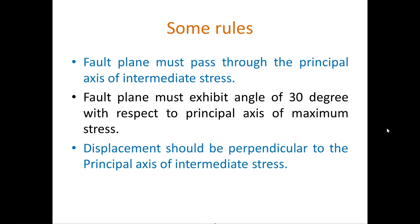Rule number one: the fault plane must pass through the principal axis of intermediate stress. Rule number two: the fault plane must exhibit an angle of 30 degrees with respect to the principal axis of maximum stress. Rule number three: displacement should be perpendicular to the principal axis of intermediate stress. The maximum, intermediate, and minimum principal stress axes are mutually perpendicular to each other.